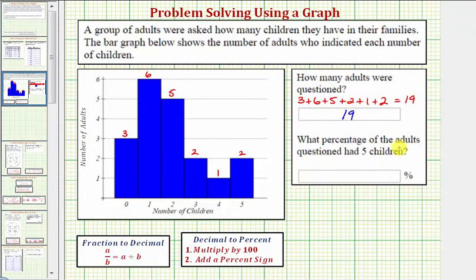Next we're asked what percent of adults questioned had five children. Just looking at the bar graph again, notice how two adults responded they have five children. So because two out of nineteen responded they have five children, the fraction of adults that had five children would be two nineteenths.